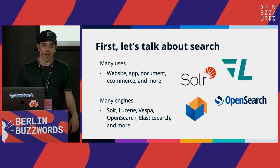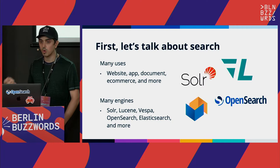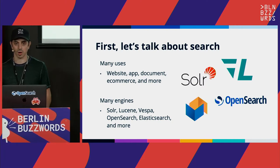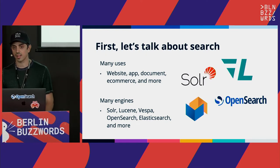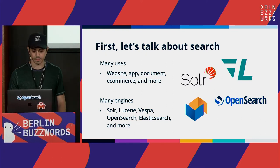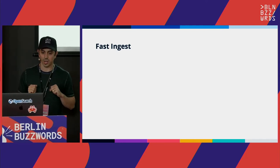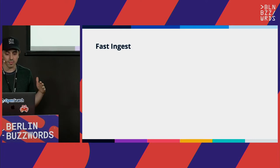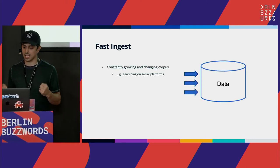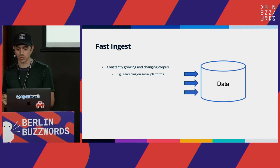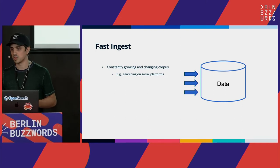There are also a wide range of options like Solr, Lucene, Vespa, OpenSearch, Elasticsearch, and more, all of which have some shared value proposition as well as their own unique benefits. Let's talk about some key features. It all begins with ingest. With the ever-growing and changing corpuses of data in today's day and age, our search tools need to quickly keep up to date to provide accurate results.